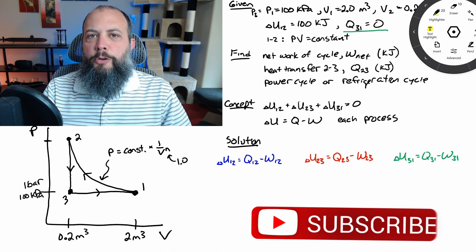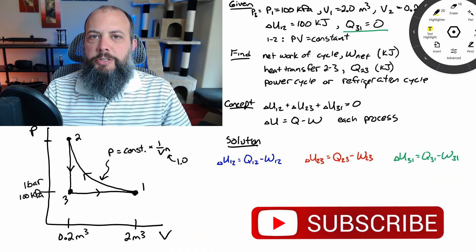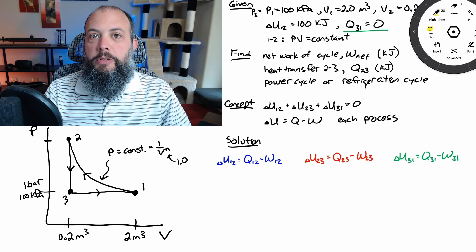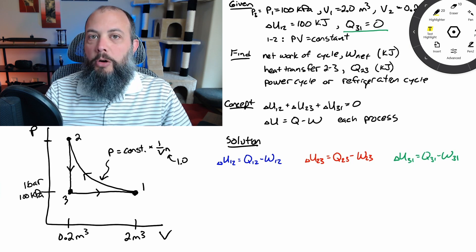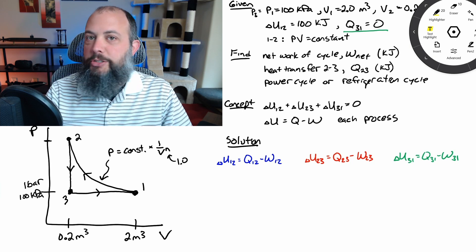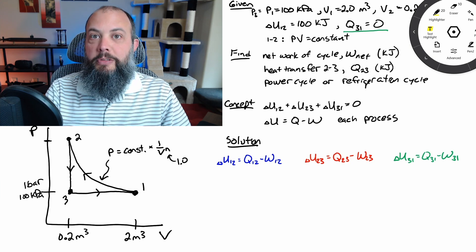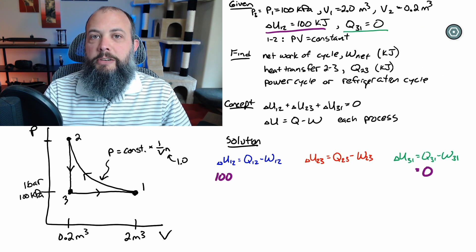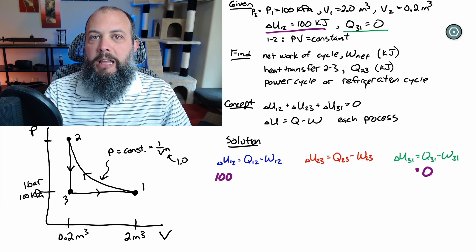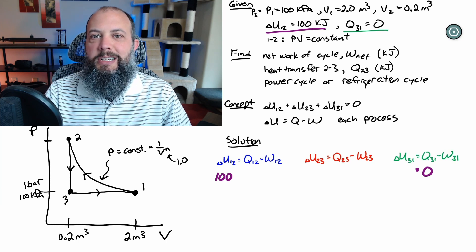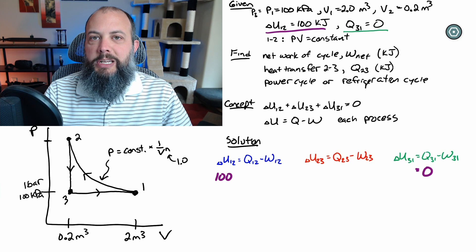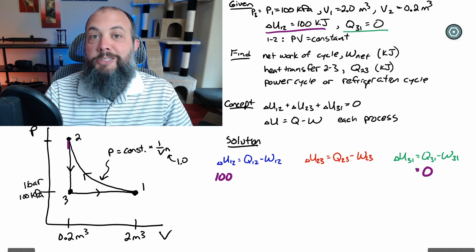In these problems it's not always immediately obvious where the best place to start is so I recommend just writing out the conservation of energy equation for all three processes first and just start plugging in numbers and you'll probably find that some of the things you need to find are going to be easier than others. We're given internal energy change from one to two so we can plug in that 100 and the adiabatic process let us plug in a zero.